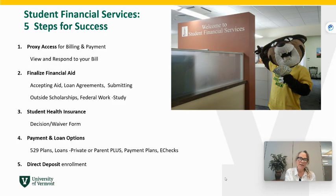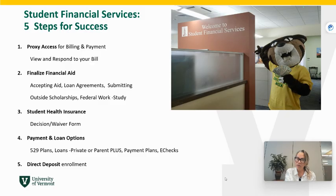The five steps we are going to cover are: your proxy access, accessing and finalizing your financial aid, your student health insurance decision and waiver form, payment and loan options, and direct deposit for any refund.